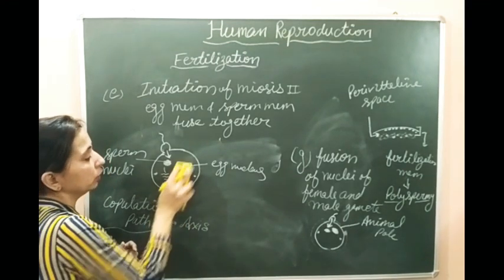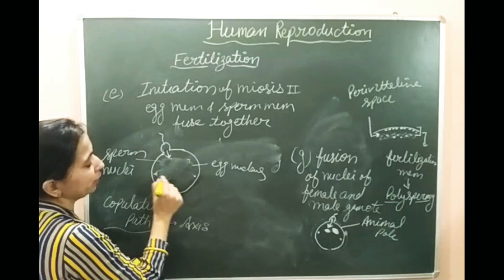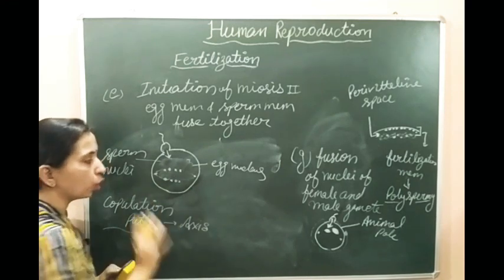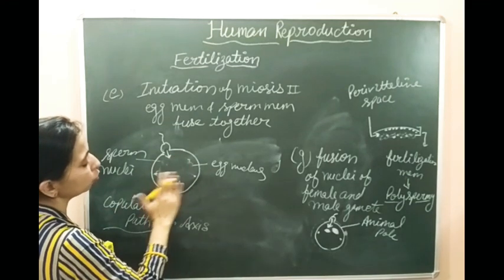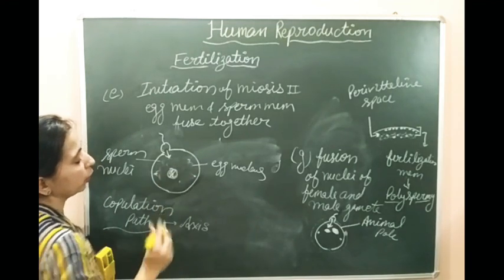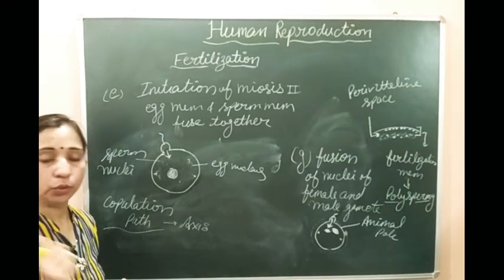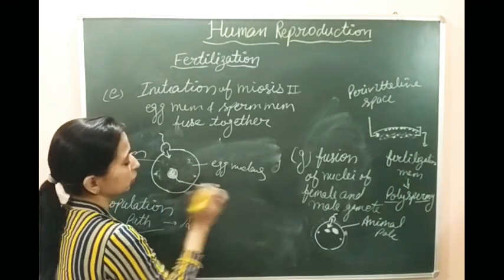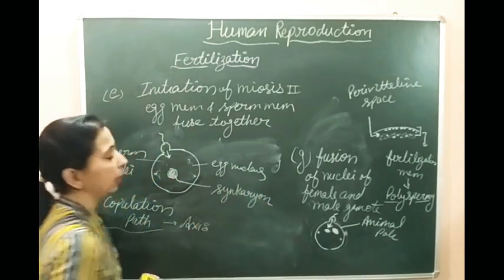After that, the centrioles will form spindle fibers, the spindle fibers will attach, and later the chromosomes of both male nuclei and female nuclei will join together. When the chromosomes of both male nuclei and female nuclei join together, this structure is known as a synkaryon.